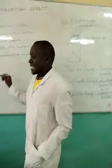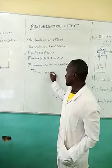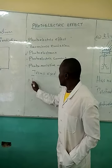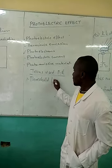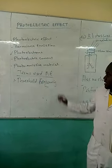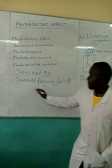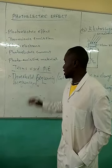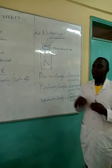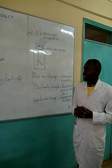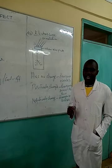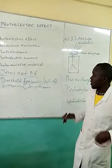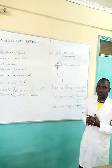We now want to look at terms used in photoelectric effect. The first term is threshold frequency, sometimes called cutoff frequency, with symbol F₀. Threshold frequency is defined as the minimum frequency of a radiation that can cause photoelectric emission. It is the smallest amount of energy that a radiation falling on a metal plate must have for it to cause photoelectric emission.